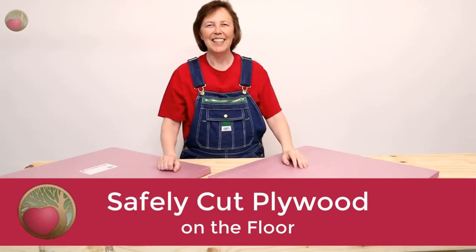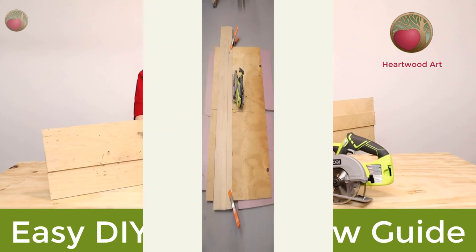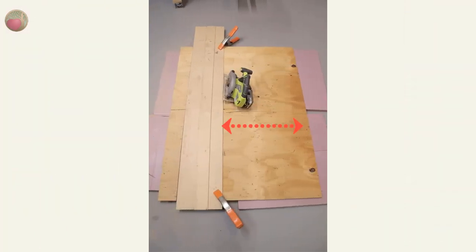And I like to cut plywood on the floor with my homemade circular saw straight edge. You can visit Heartwood Art to see how I made that. Now I cut the side to side width first, and then I cut the length.